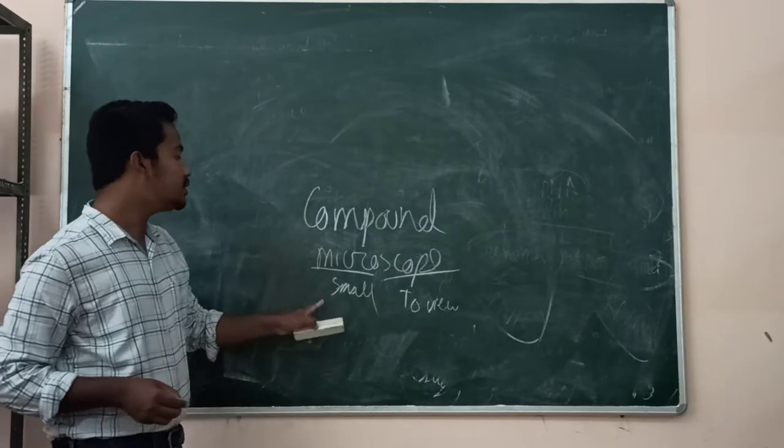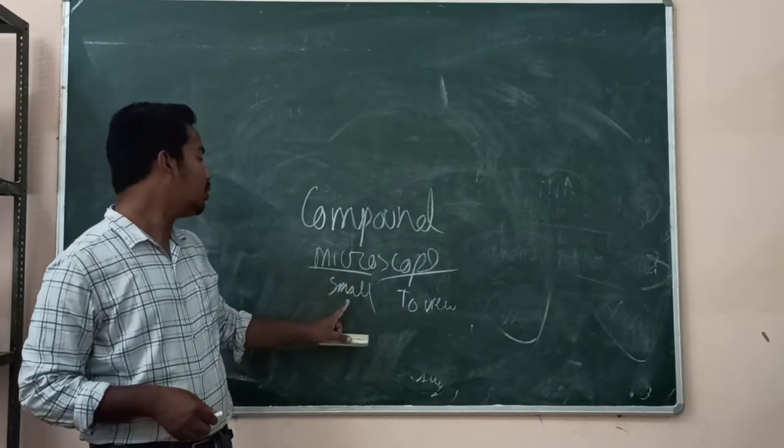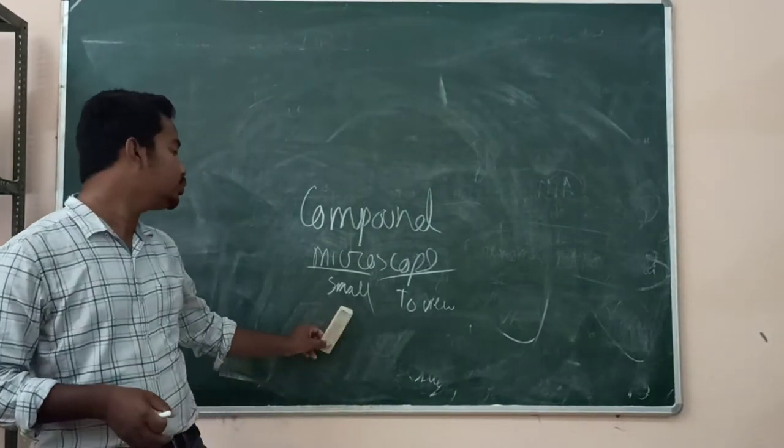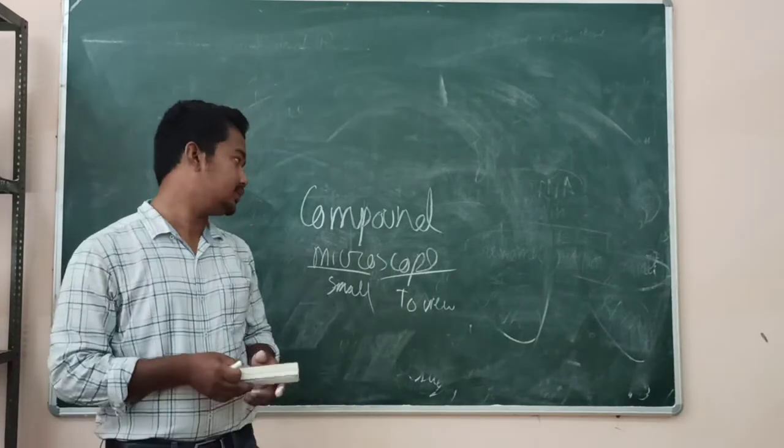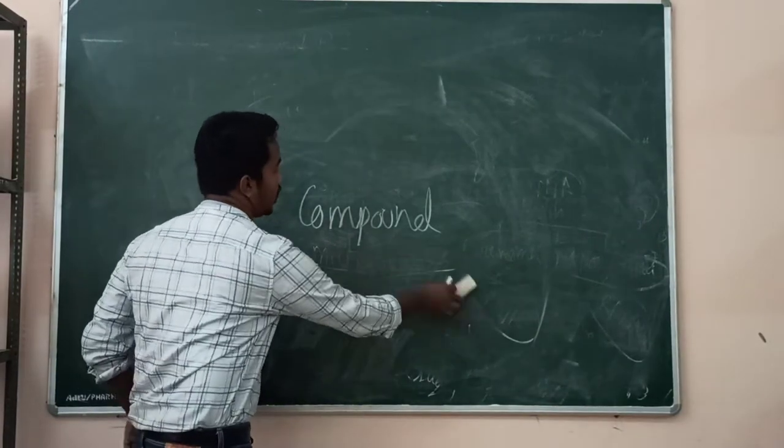By the name itself, microscope is an instrument which is used for viewing the smaller objects which we cannot see with our naked eyes. Microscopes are used for viewing the smaller objects.